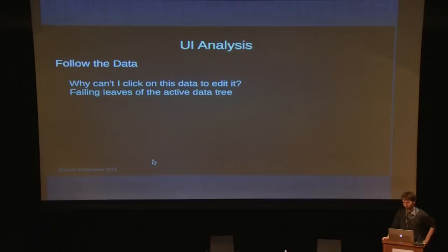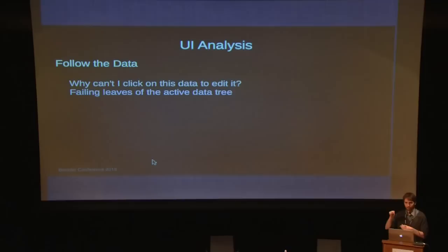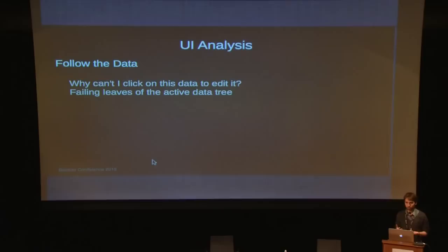Another thing is that the way Blender organizes data is kind of non-standard. The main difference with Maya, Houdini, or XSI is that the way you access data there is often through a graph or tree structure where you just double-click on some data and it shows you the properties — there's one properties window. In Blender, it's kind of the other way around: you have to go to an editor and find your data there. It would be nice if you could just click on data in the outliner and it would show you the properties of that data, instead of having to know where to find it.